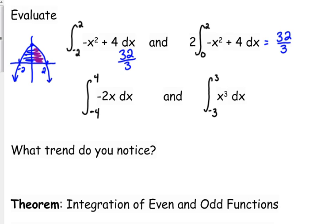So that's a good property that we can use. That is an even function. Negative x squared plus 4 is an even function.